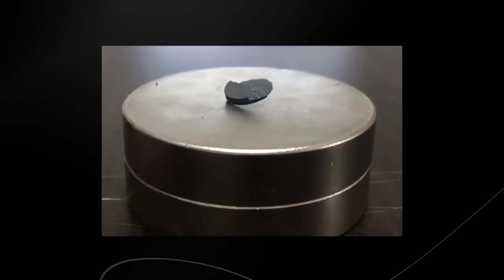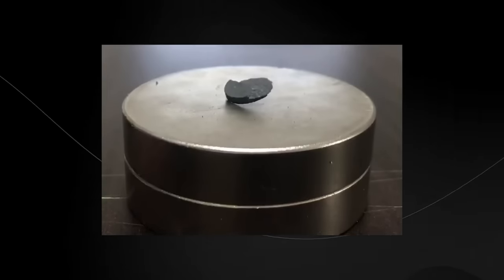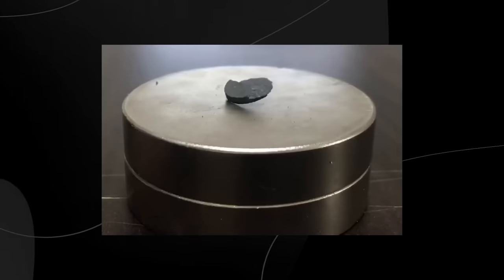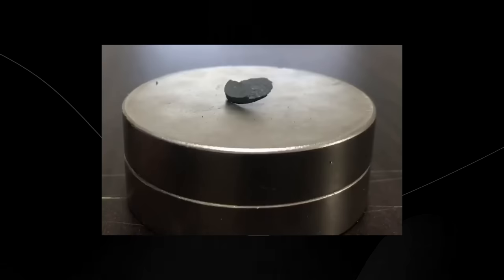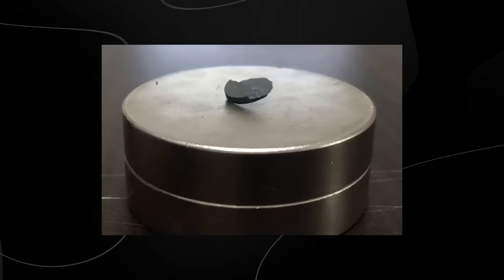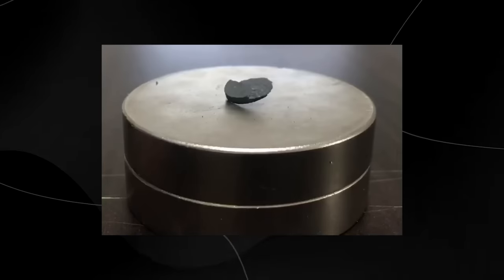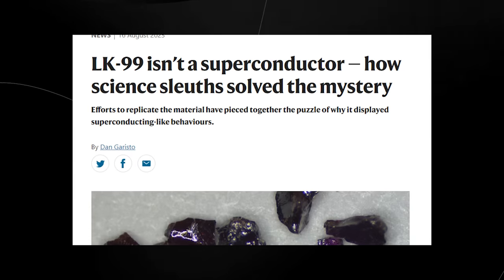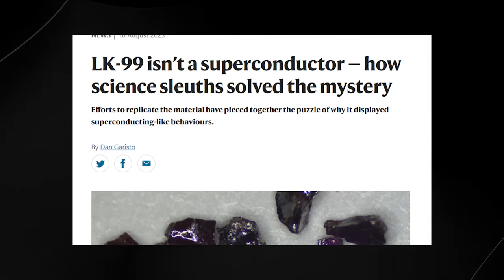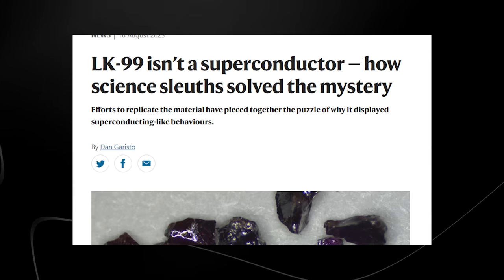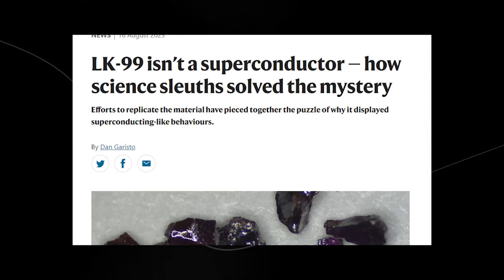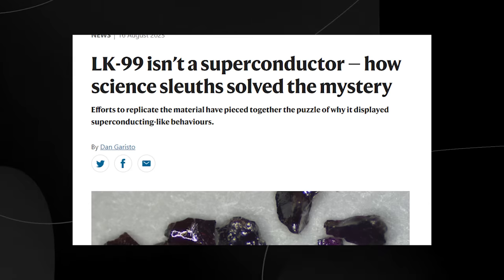So what was LK-99 and why was there such controversy surrounding the initial claims? The controversy revolves around the initial claims that it was a room-temperature superconductor. These claims were met with a mix of excitement and skepticism in the scientific community due to the potential implications. However, subsequent attempts to replicate the experiment yielded mixed results, with some researchers reporting similar findings while others failed to reproduce the claimed superconducting state.